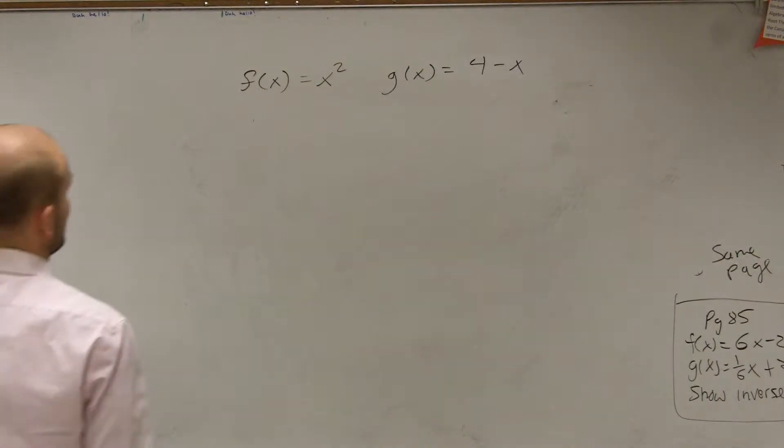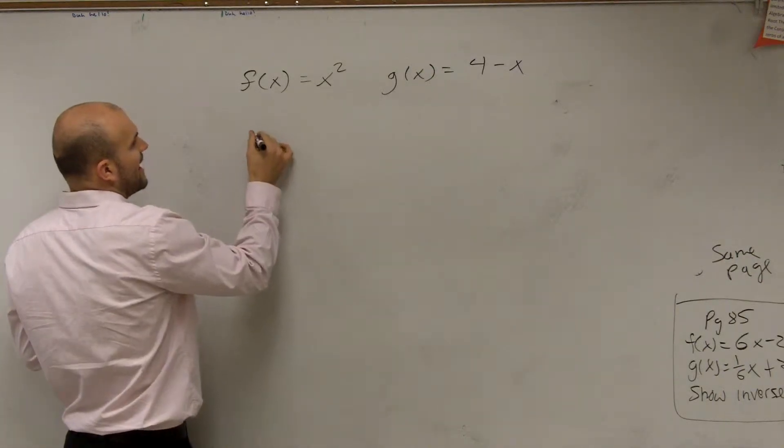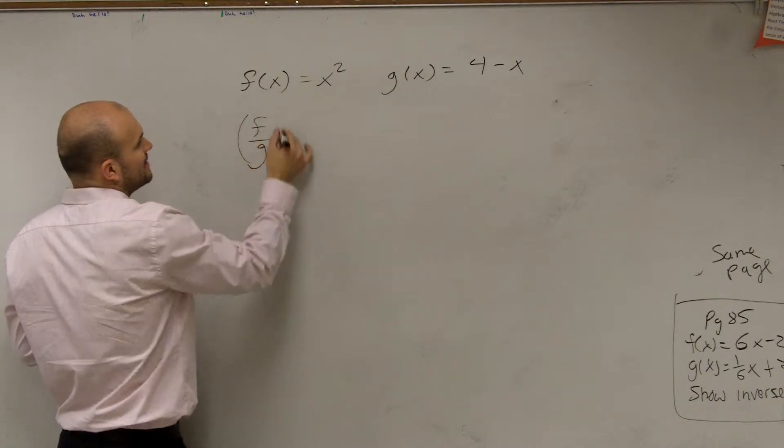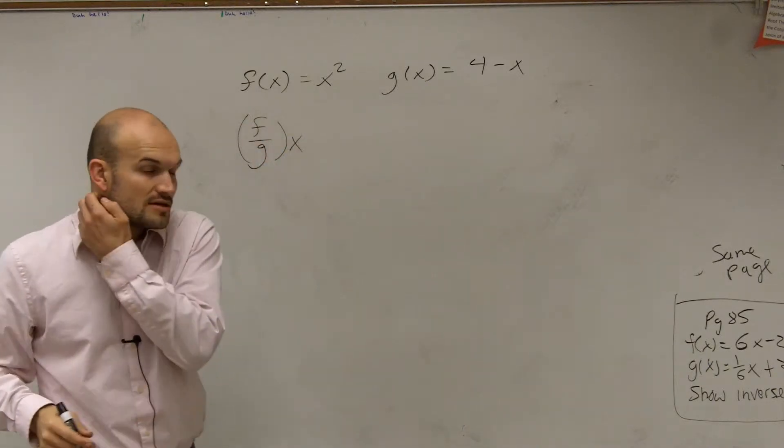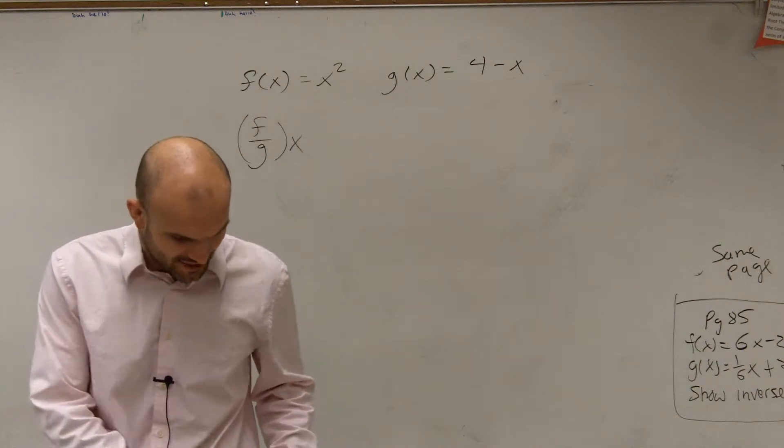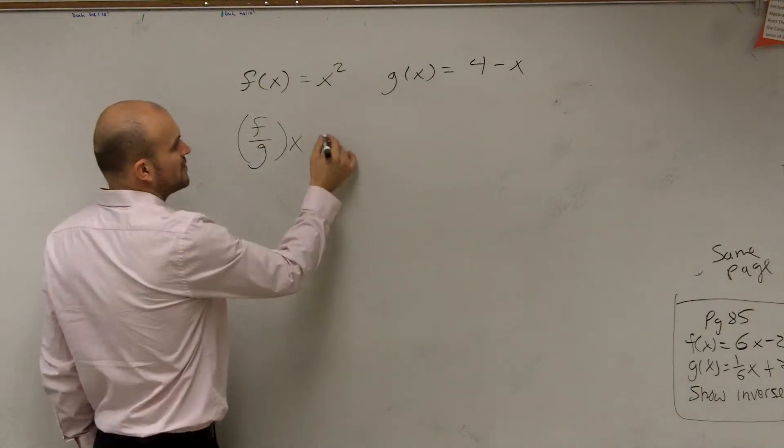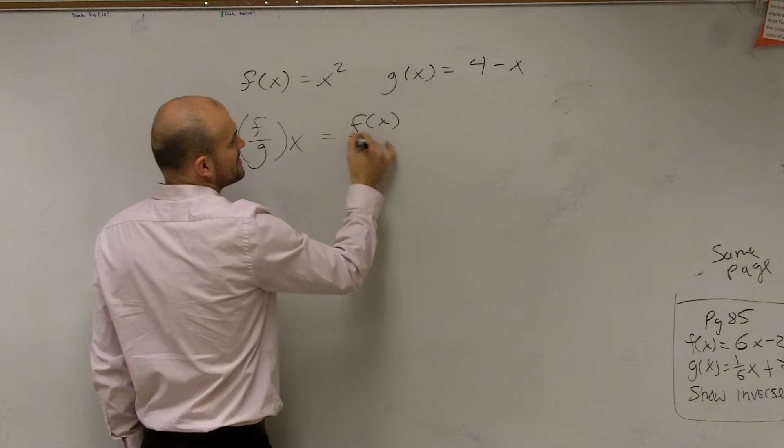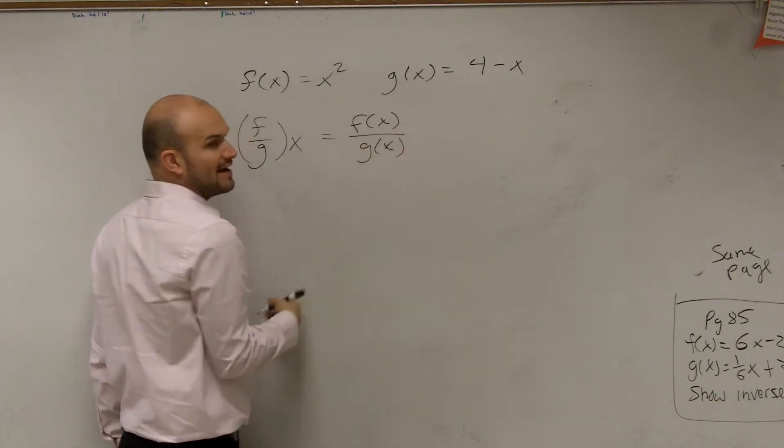So the last one here is f divided by g of x. When we have f divided by g of x, what they're simply asking us is to divide our two functions - to take f of x and divide it by g of x.